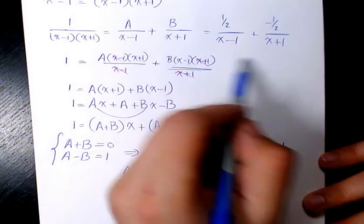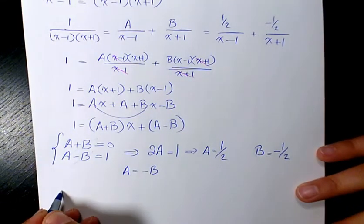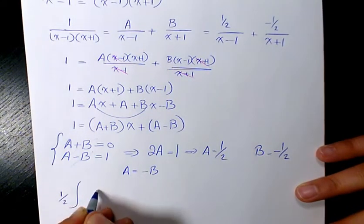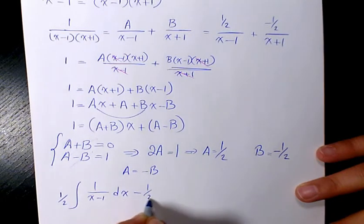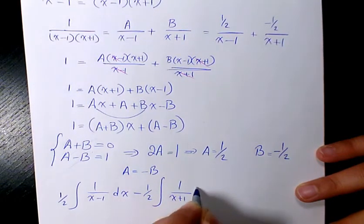So now you need to find out the integration of this one. You take 1 over 2 out, 1 over x minus 1 dx minus 1 over 2, 1 over x plus 1 dx.